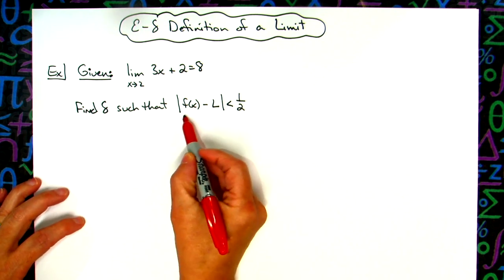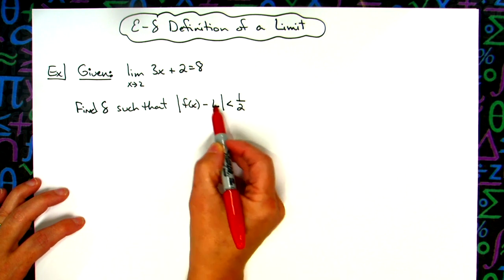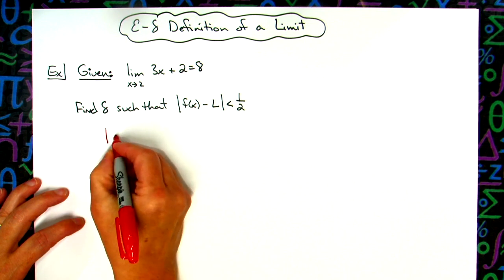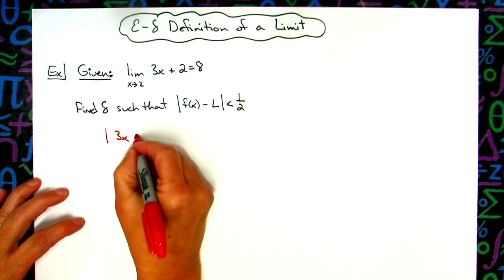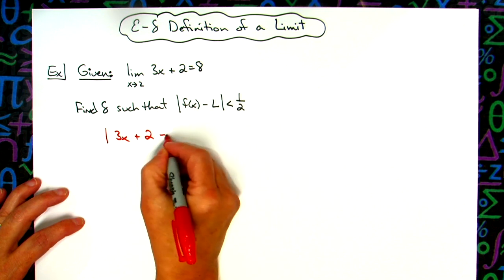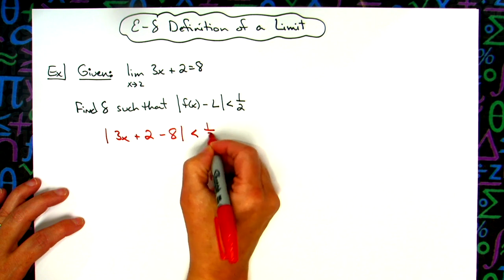So basically, we just need to follow this. We need to take the absolute value of the function and subtract the actual limit, which is going to be an eight. So I'm going to have the absolute value of three x plus two, that's my function value, now minus the limit, so minus eight, absolute value is less than one half.